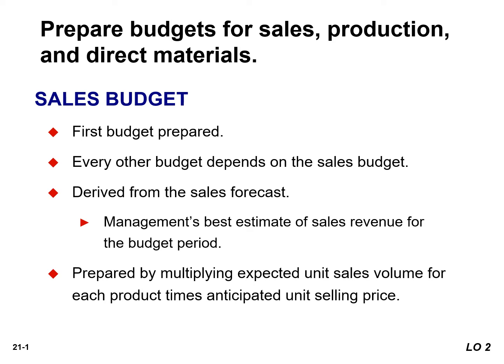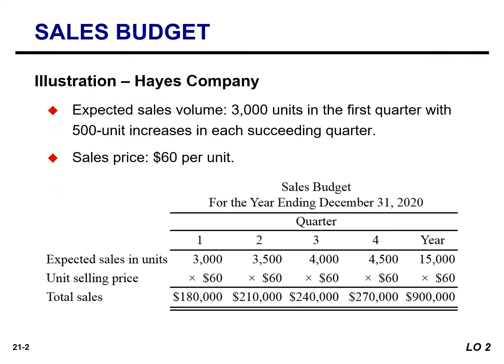When it comes to the sales budget, you're simply going to multiply the expected unit sales volume for each product times the anticipated unit selling price. Hayes Company expects sales volume to be 3,000 units in the first quarter with 500 unit increases in each succeeding quarter. The sales budget is for the year by quarter based on a selling price of $60 per unit. They expect total sales to be $900,000, which is also reported on the budgeted income statement.